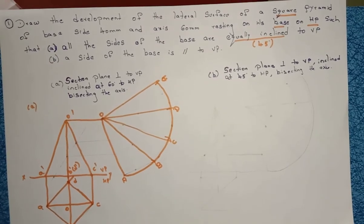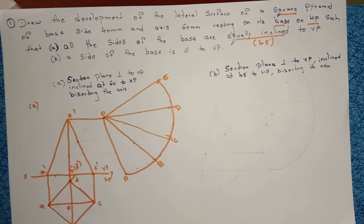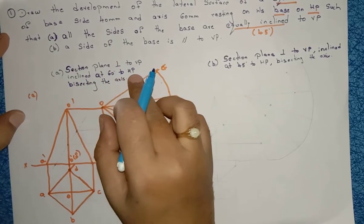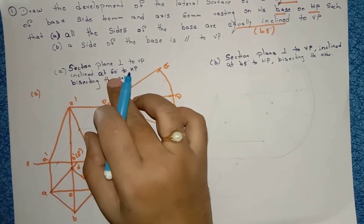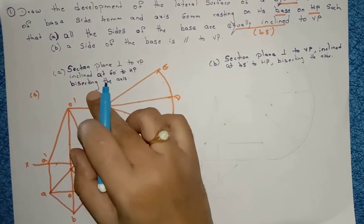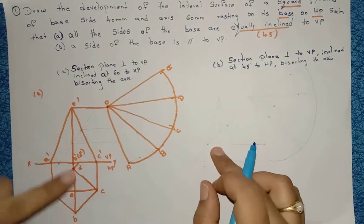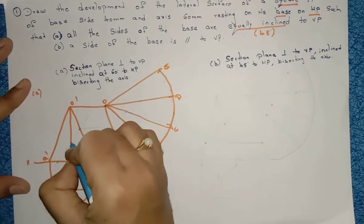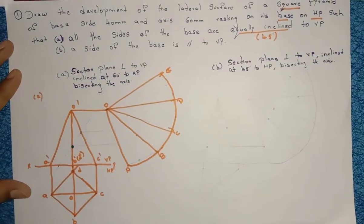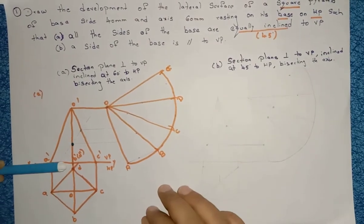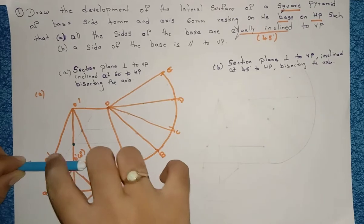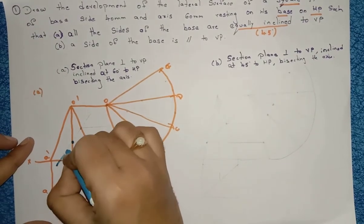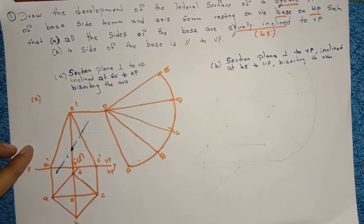If you are going to draw a sectional plane — for example, a sectional plane perpendicular to VP, inclined at 60 degrees to HP, bisecting the axis — the condition of 60 degrees to HP means you draw the angle here. The condition of bisecting the axis means you mark the midpoint of the axis. Keep your protractor and move it to find where 60 degrees touches the midpoint, then draw the sectional plane.